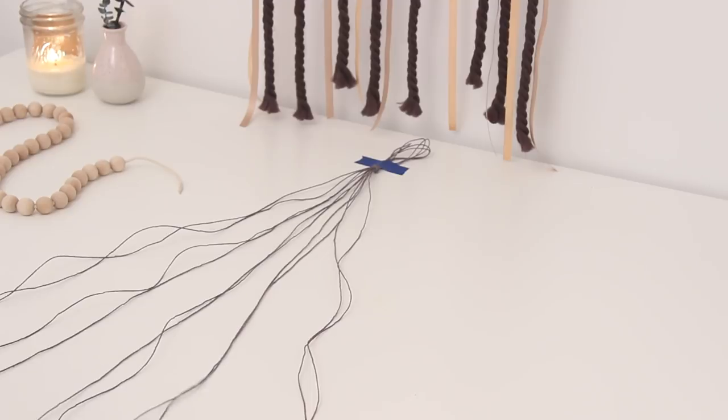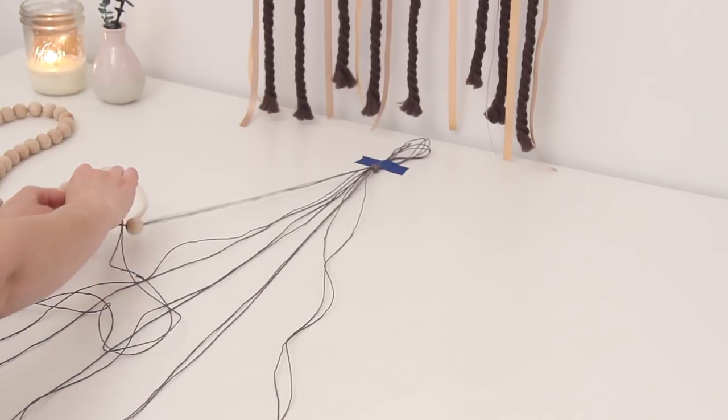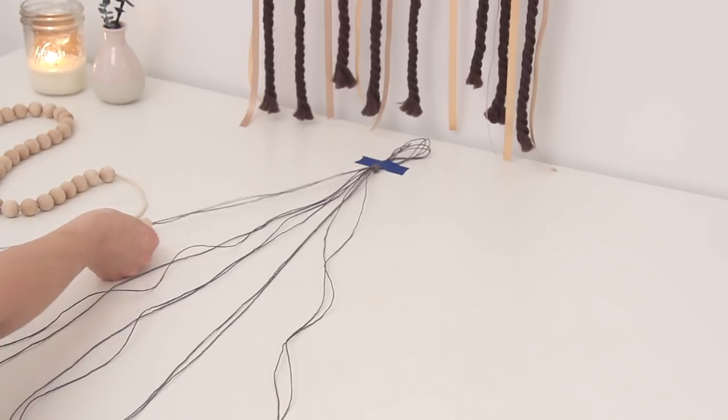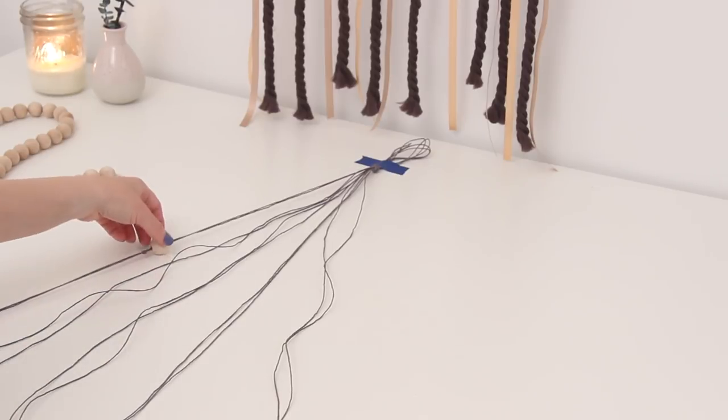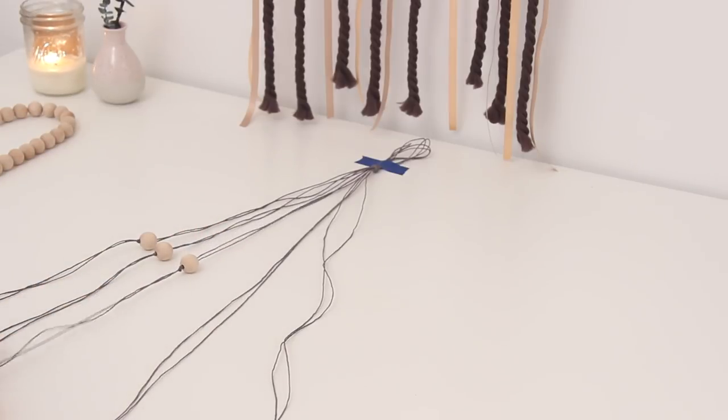Take a wooden bead and slide it onto the first two pieces of string and tie a knot at the bottom. I did mine about 8 to 10 inches down from the top knot. This will depend on how big of a pot you're using, so guesstimate based on that. Do this all the way across and tie knots at the bottom so the beads don't slide down.